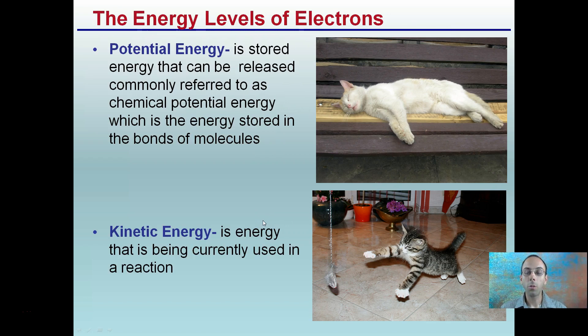The energy levels of electrons. There's two main types. There's potential energy, which is probably how you're feeling right now. It's stored energy that can be released, commonly referred to as chemical potential energy, which is the energy stored in the bonds of molecules. Think of it as like an energy at rest there. Then we have our kinetic energy, which is the energy that's being currently used in a reaction. Those chemical bonds that are just kind of there, they have that potential energy or that stored energy. Then, when a reaction is occurring, we have that kinetic energy, so you can see here with the cat playing with the toy mouse here. That's the energy currently being used in a reaction.